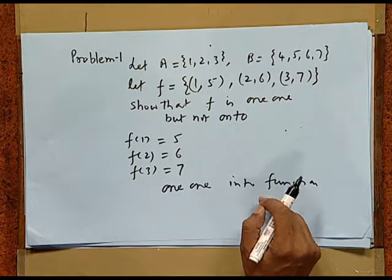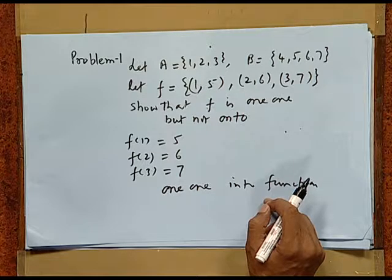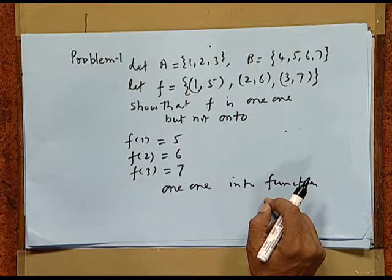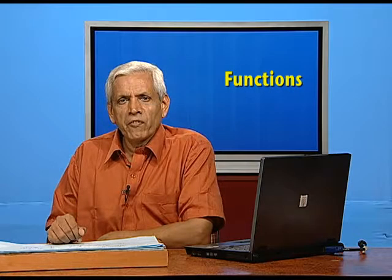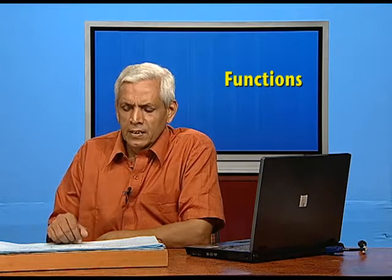So eventually, the given function turns out to be a one-one into function, or you can call it into but injective, because one-one is also called injective.